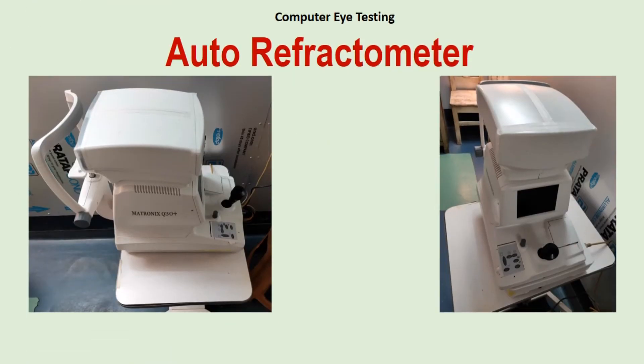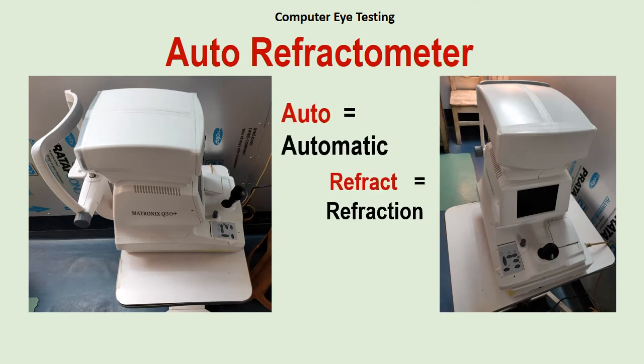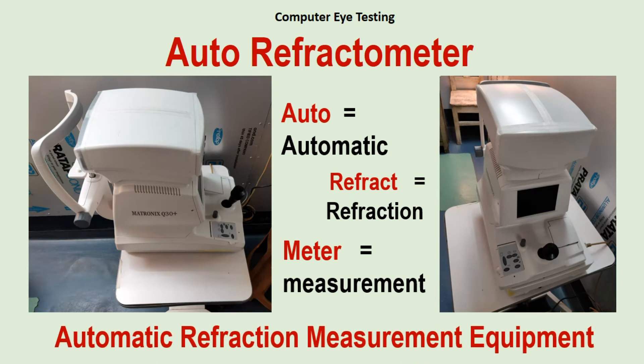If we analyze the name: 'auto' means automatic, 'refractor' means refraction or testing for spectacle power, and 'meter' means capable of measuring. So the name itself indicates that it is a machine capable of automatic refraction measurement — meaning automatic measurement of spectacle power.